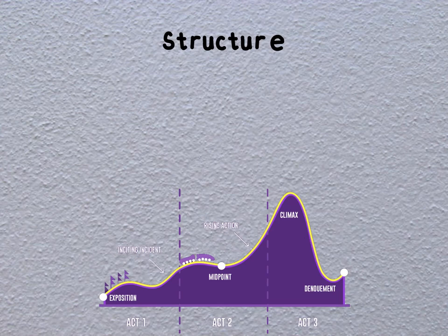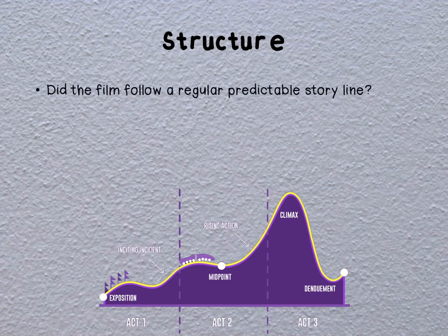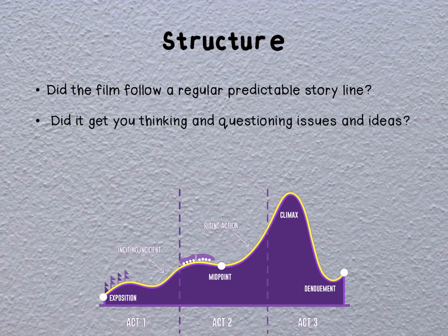You can provide some detail about the structure of the film in your film review. The structure refers to the storyline. Did the film follow a regular, predictable storyline? In other words, was the storyline easy to follow? Did it progress in a straightforward, linear pattern? Or were there uses of flashbacks or flash-forwards, and were these effective? Did the film get you thinking and questioning issues and ideas? Perhaps the film you chose to review touched on particular social issues, like poverty or gender relations. If so, how or why did it get you thinking or questioning those issues and ideas?